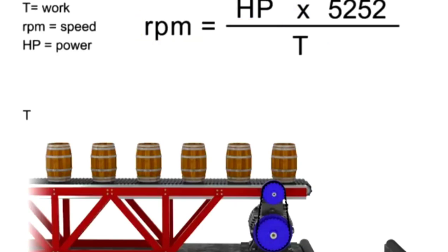As the torque decreases, horsepower also decreases to maintain constant RPM.